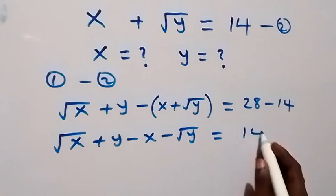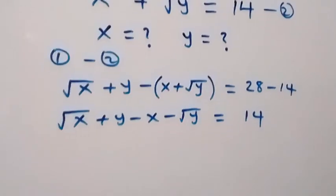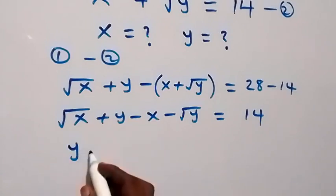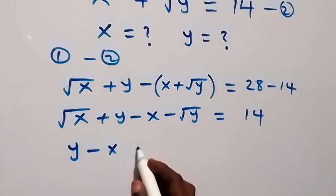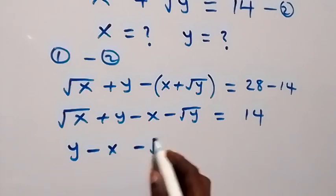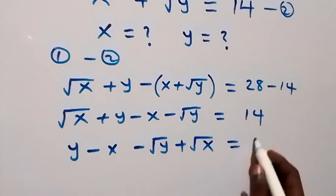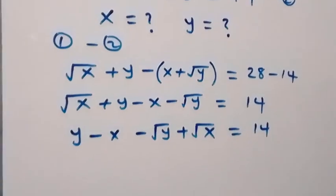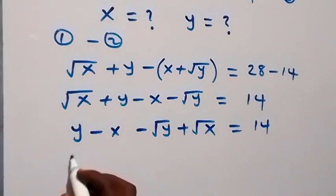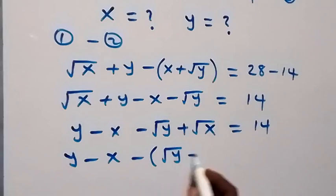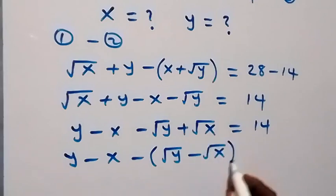Now equals to 14 on this side. Then here we have y minus x, and we have minus √y then plus √x equals to 14 from here. Also here, we can write this as (y minus x) and minus into bracket (√y minus √x), close bracket, equals to 14.